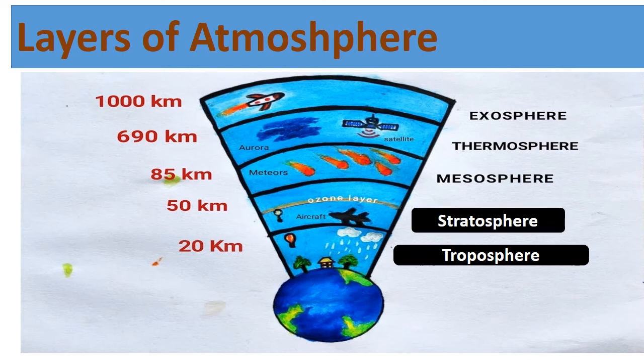The second layer is the Stratosphere. Many jet aircraft fly in this layer. Ozone gas is also present in this layer. Ozone absorbs harmful ultraviolet rays from the sun. These rays can cause skin cancer.